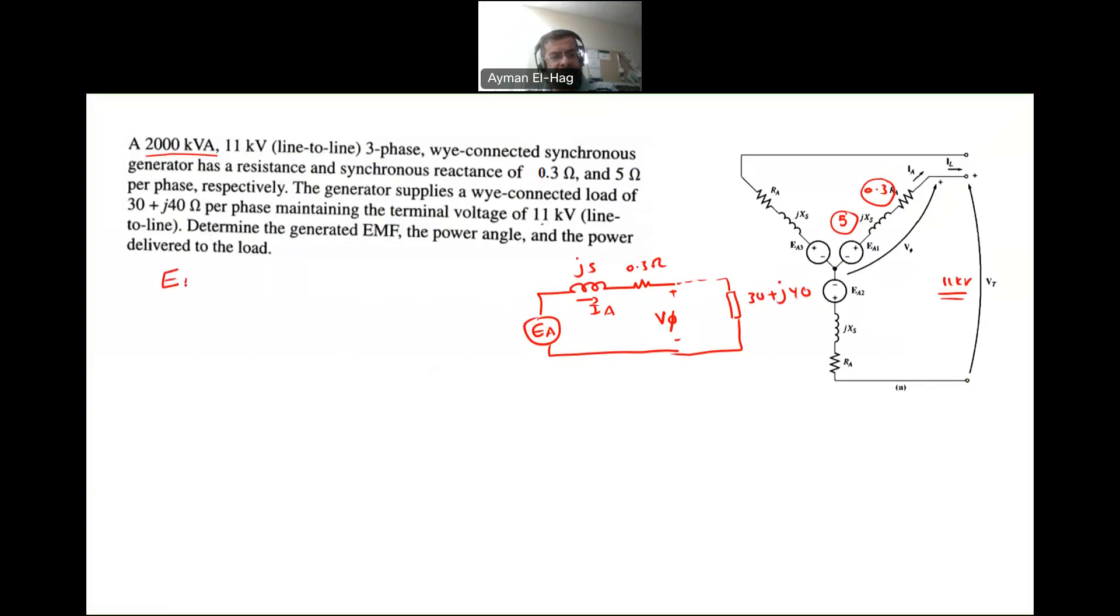So how to find EA? Your EA is basically your V phase plus IA times the 0.3 plus J5. This is your EA. So I need to find V phase, and I want to find IA.